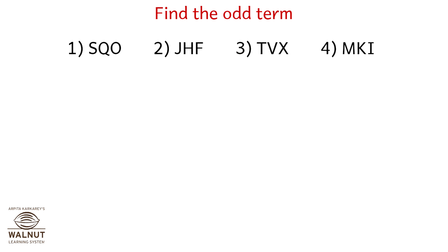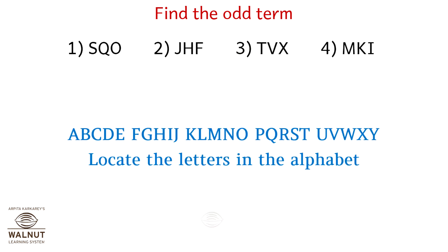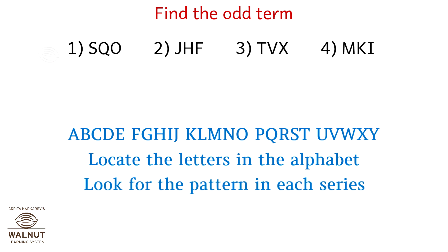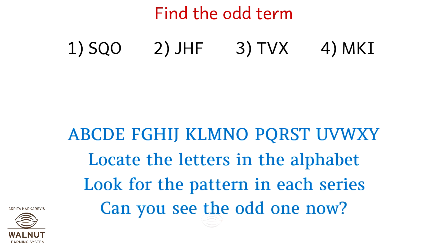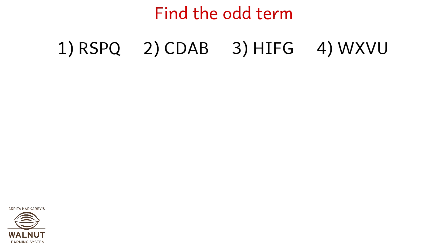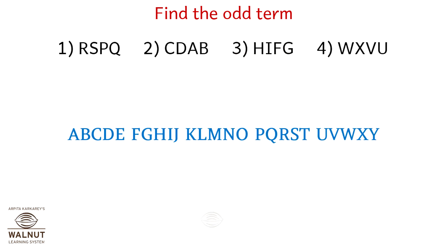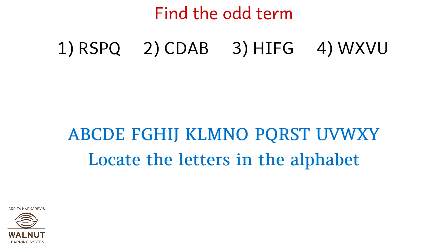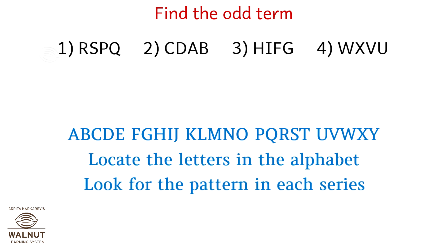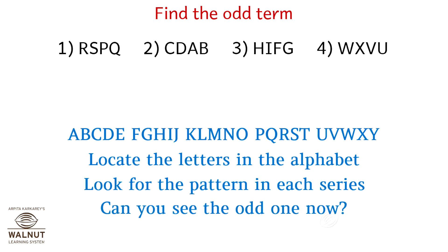Find the odd term. Locate the letters in the alphabet and look for the pattern in each series. Can you see the odd one out now? Of course, it's option 3. Find the odd term again — the series is given below. Locate the letters in the alphabet and look for a pattern in each series. Can you see the odd one now? Yes, it's option 4.